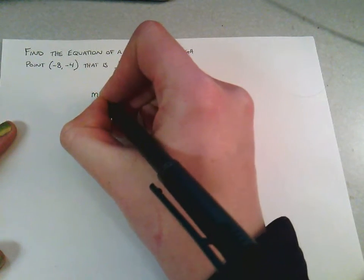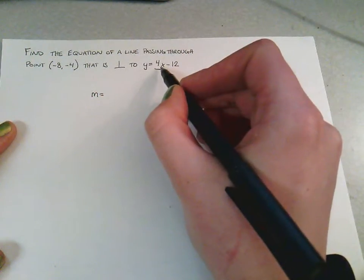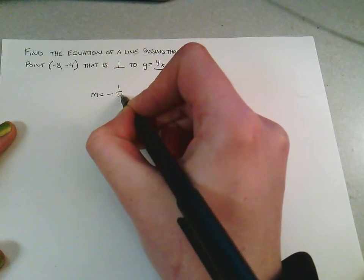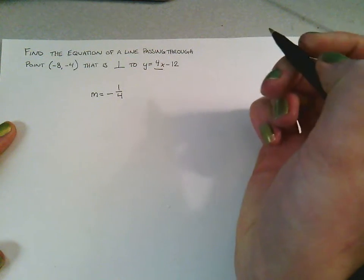we will have our m equal to the negative reciprocal of this, or -1/4. That will be our new slope.